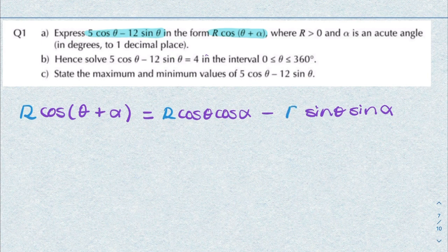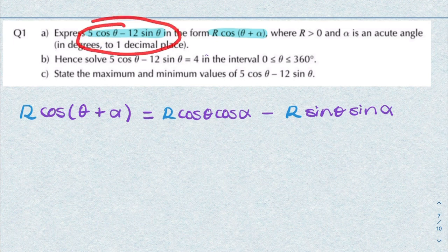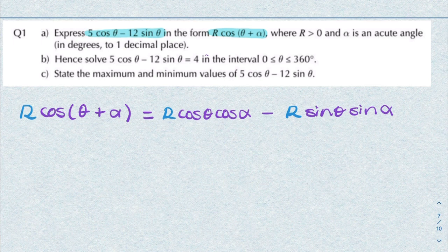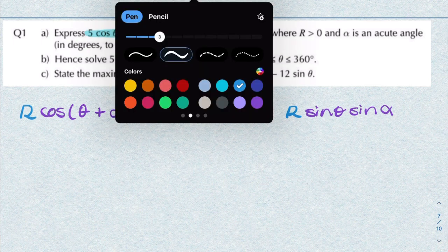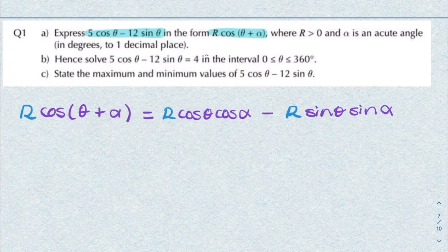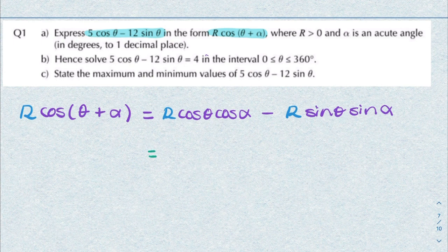Here they have this coefficient R, so we can add that. R multiplied by that will be R multiplied by both. What we're given is 5 cosine theta minus 12 sine theta, so we can write that as our target.